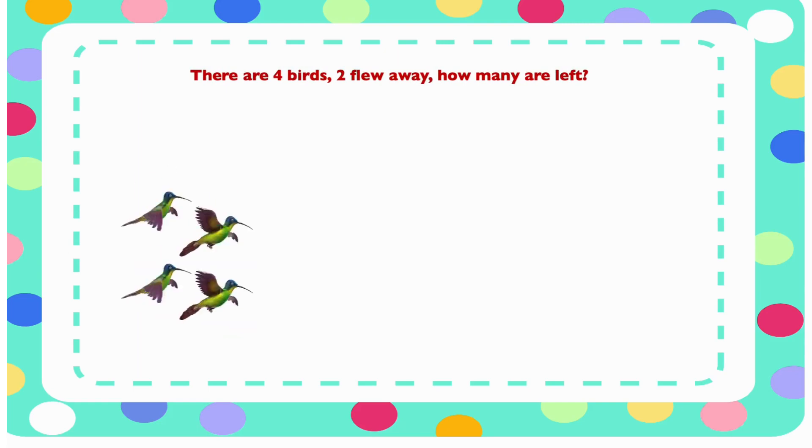We have four birds in the picture, and two flew away. How many are left? Now we have to count them to find out how many left. 1, 2, 2 left. So 4 minus 2 equals 2.